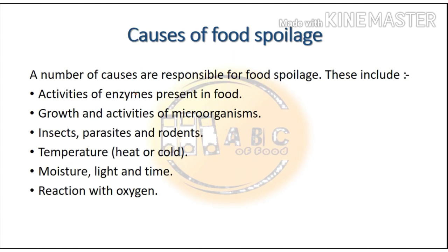A number of causes are responsible for food spoilage. These include activities of enzymes present in the food, growth and activities of microorganisms, insects, parasites and rodents, temperature (whether heat or cold), moisture, light, time, and reaction with oxygen. Enzymes present in food are responsible for changes in color or texture. Insects and rodents destroy grains if not properly stored. Temperature, if not properly controlled, contributes to spoilage — excessive heat causes protein denaturation and destroys vitamins, while uncontrolled cold can also spoil food; fresh fruits and vegetables are damaged even at cold temperatures.